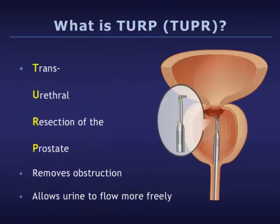TURP stands for transurethral resection of the prostate. Some surgeons may also use the term TUPR, which stands for transurethral prostate resection. This operation involves removing prostate tissue that is squeezing around the urethra, or urine channel, and obstructing urine flow. Removing this obstructing tissue opens up the urine channel, allowing urine to flow more freely.